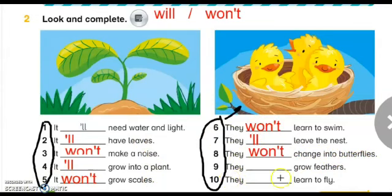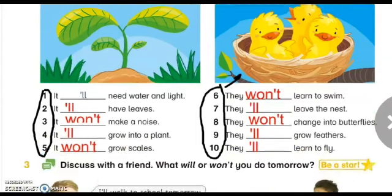Number nine: They grow feathers. سوف ينمو لهم ريش. Excellent, will. And the last one, number ten: They learn to fly. Excellent, so here we have to use will. They will learn to fly. سوف يتعلموا الطيران. My students, now move to the next activity.